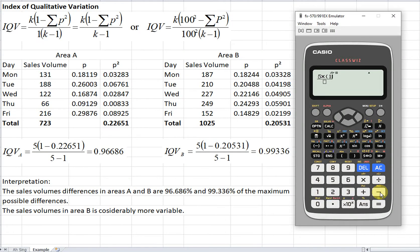So one minus, then P square. So the total P square, we have 0.22651.